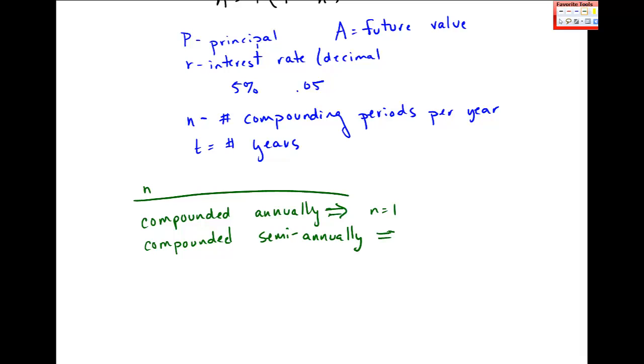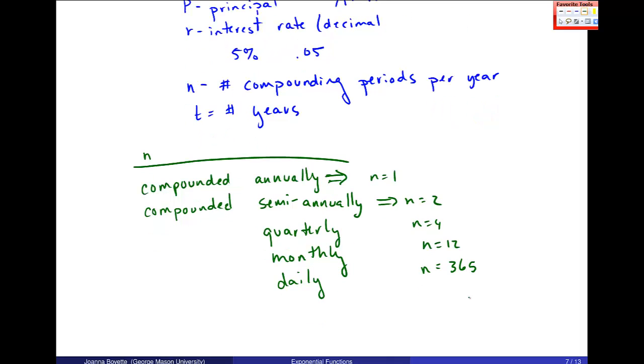In that case, N is 2. We also have quarterly, N is 4, monthly, N is 12, and daily. There's a convention, let me make sure, we'll use 365. Okay, there's some convention for daily compounding.